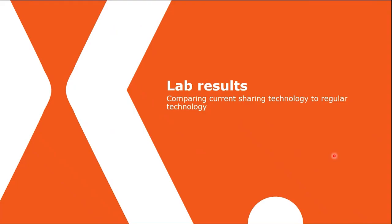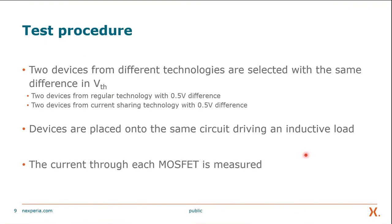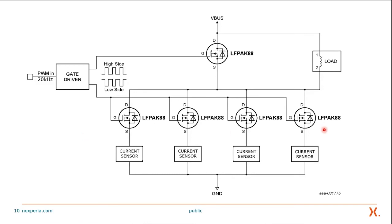Let's have a look at some lab results to see what this means. We compare current sharing technology to regular technology. The test procedure takes two devices from different technologies, both selected with the same 0.5 volt difference in threshold voltage, and places them onto the same circuit driving an inductive load at 20 kilohertz. Here we have a simplified circuit diagram with four MOSFETs in parallel and a current sensor for every single MOSFET, so we know how much current is going through each MOSFET at any given point in time.